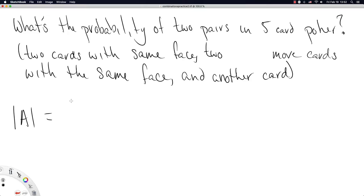We've got to be careful here. There are 13 available faces and we want to specify two of them. Now each of those two faces has four available cards and we want two of each. We'll do that twice.